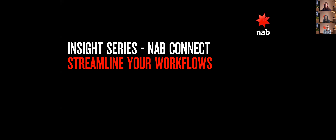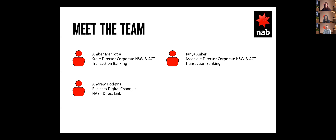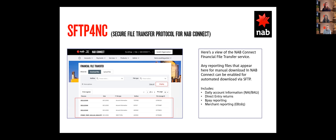So this morning, we're going to be talking about NAB Connect and the ability to streamline your business, utilizing a new service that we're offering to our NAB Connect customers. It's known as SFTP for NAB Connect. SFTP stands for Secure File Transfer Protocol, and it's simply a means of being able to transfer data securely between two organizations. It may well be the case that you're using it already in other areas of your business. In this particular case, we're talking about the ability to download your reconciliation or reporting type files from NAB Connect in a secure way, which saves time.